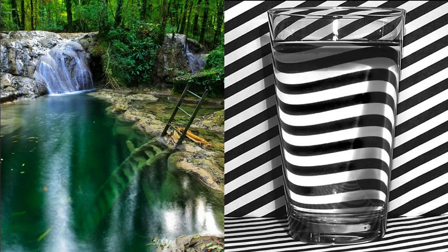We see the same thing in the right hand image, with the diagonal black and white lines in the background. When we look through the water, the lines look curved and bent. This bending of the wave occurs not because the wave is going around the barrier, but rather that it's going through the barrier, that it's changing mediums.